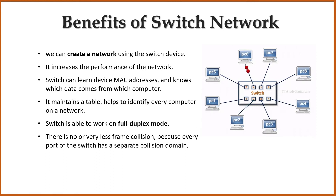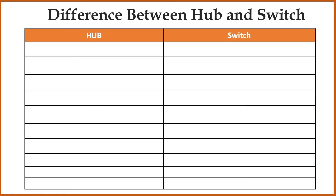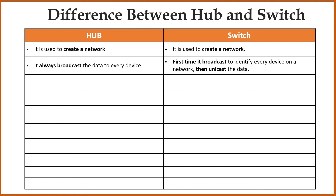Now let's discuss some differences between hub and switch. Both devices are used to create a network. Hub always broadcasts the data to every device, while switch broadcasts only the first time to identify every device on the network, and then it always unicasts the data.